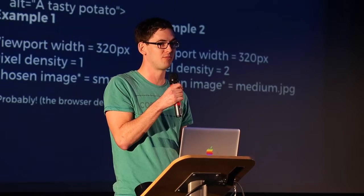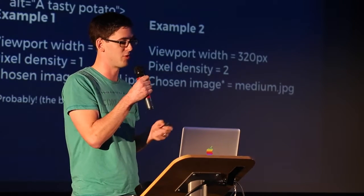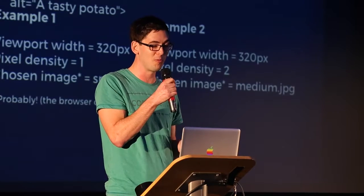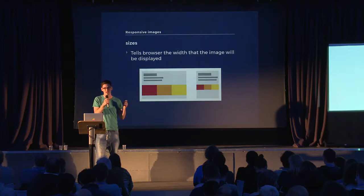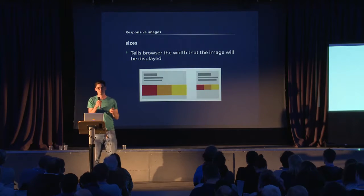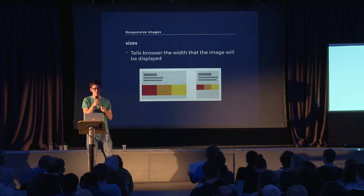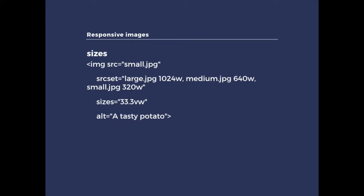But that all assumes the images are going to be shown full width in the browser or viewport, which obviously isn't the case in real life. We often use layouts where we want images displayed in a three-column grid. In that case, we need to use the sizes attribute. Here I've specified sizes equals 33.3vw — vw standing for viewport width. So you're telling the browser that when this image is displayed, it's going to be a third of the viewport width.